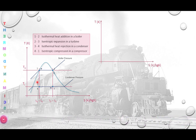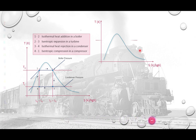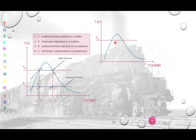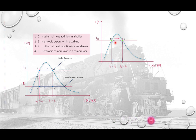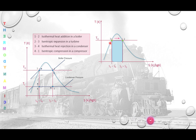This TS diagram shows how to determine the area under the process path in order to find the heat supply. Your heat supply is equivalent to the area from state point one to two — the height T_H multiplied by the base (s2 minus s1, or s3 minus s4).